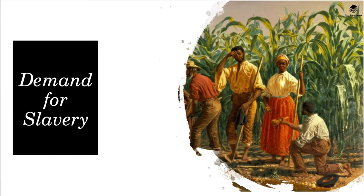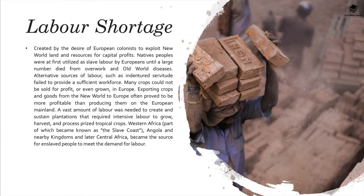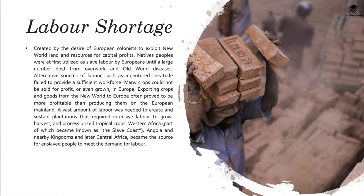One key condition that caused the demand for slave labor was a labor shortage. Created by the desire of European colonists to exploit new world land and resources for capital profits, this shortage fueled the slave trade. Native peoples were the first to be used as slave labor by Europeans until large numbers died from overwork and old world diseases. Alternative sources such as indentured servitude failed to provide a sufficient workforce. Many crops could not be grown or sold for profit in Europe, so exporting from the new world proved more profitable. A vast amount of labor was needed to create and sustain plantations growing prized tropical crops. Western Africa — part of which became known as the slave coast — Angola, nearby kingdoms and later Central Africa became the source for enslaved people.